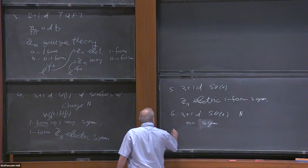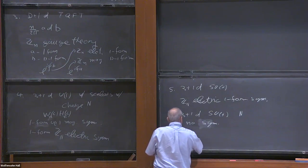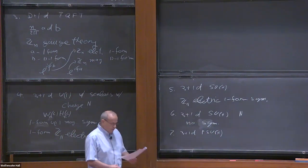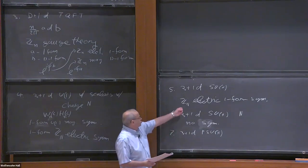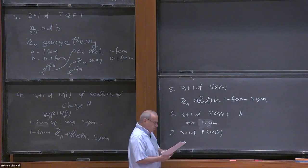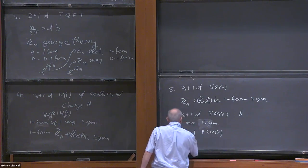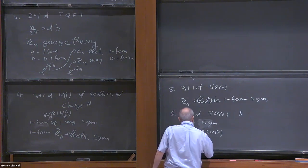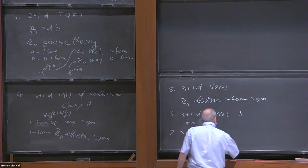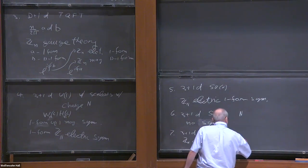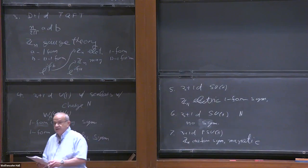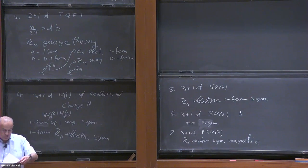Example seven was 3+1 dimensional PSU(N). Here we cannot add quarks in the fundamental, and we also don't have the electric symmetry because we gauged it. But instead we have a Z_N one-form symmetry which is magnetic. It cannot be thought of as having anything to do with the center of the group, so it would not be called a center symmetry.